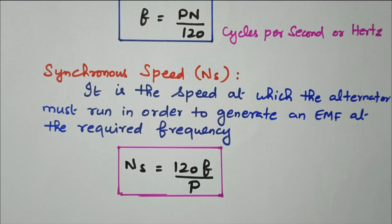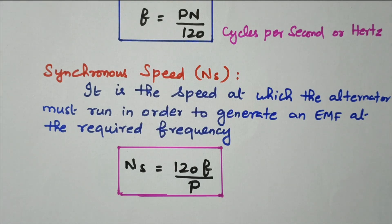In summary, in this video we discussed the induced EMF of an alternator. First we derived the equation for concentrated, full-pitched winding. Then for distributed, short-pitched winding we multiply by factors Kc, Kd, and Kf, whose values and formulas were discussed. Finally, the frequency of induced EMF and the synchronous speed were derived.